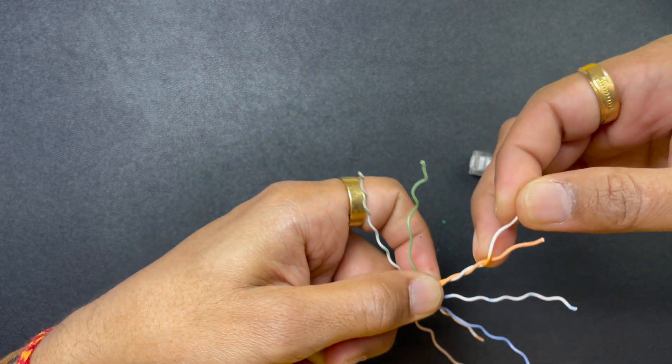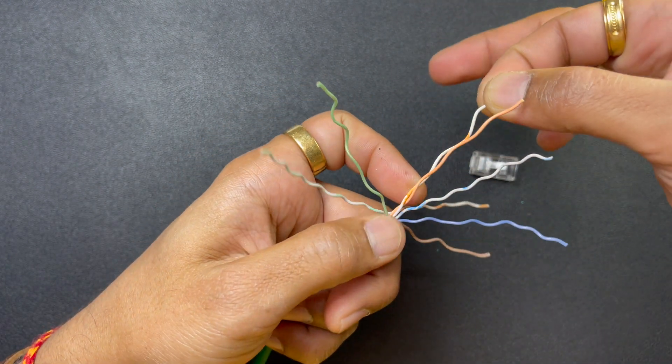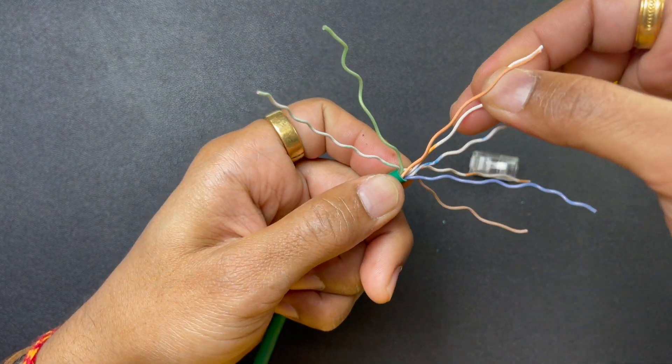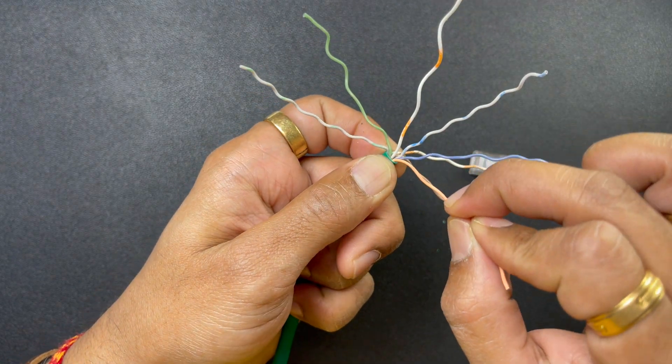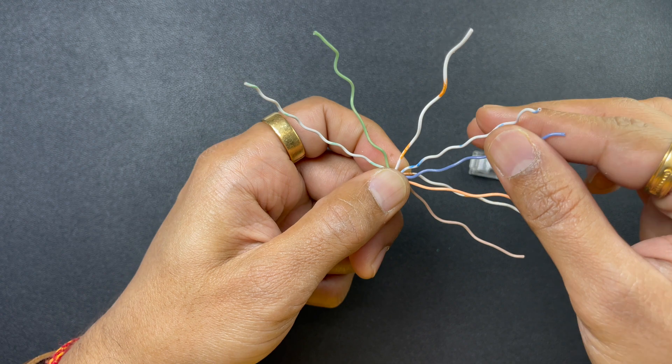And we are going to split orange. White-orange stays on the left, orange stays on the right of blue.